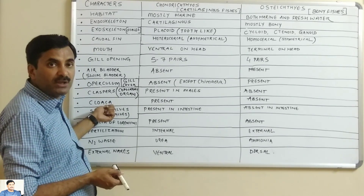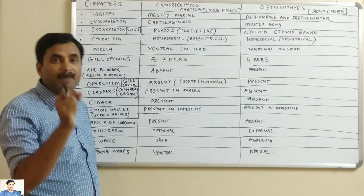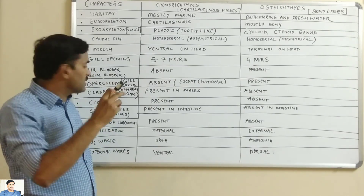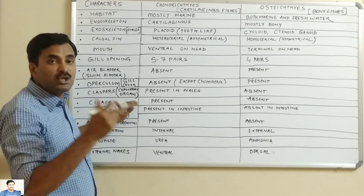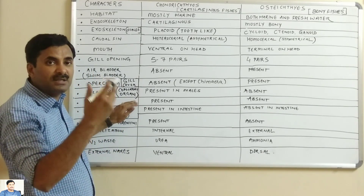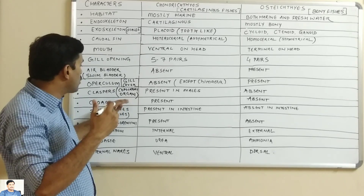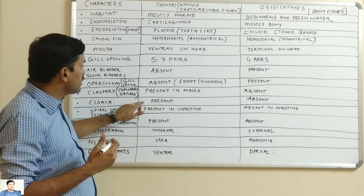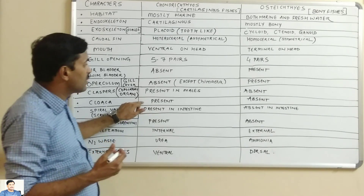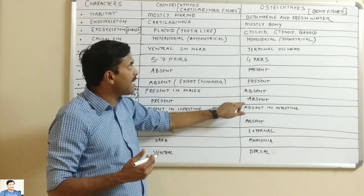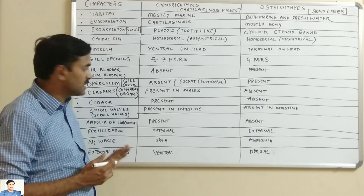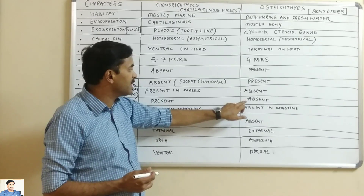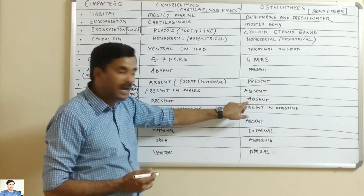Next, cloaca. Cloaca is a common aperture where the urinogenital ducts and different openings open into a common chamber. Cloaca is present in the cartilaginous fishes, while it is absent in bony fishes because in bony fishes the openings are separate.